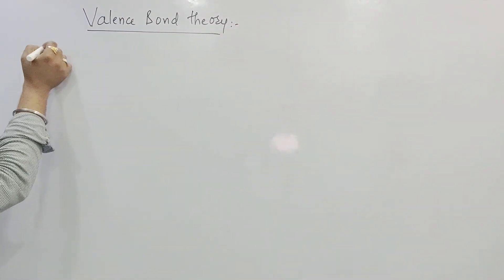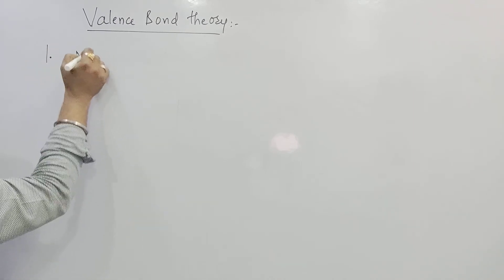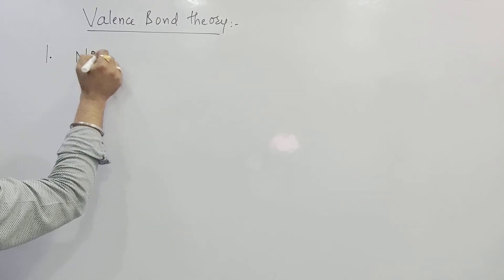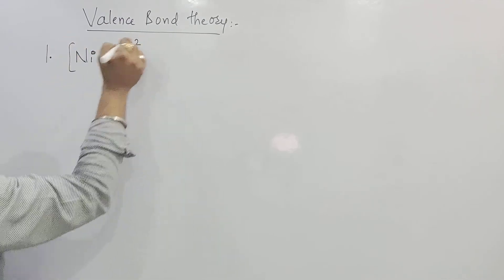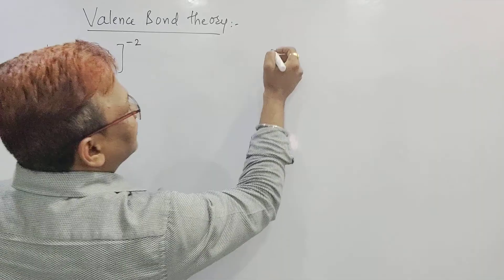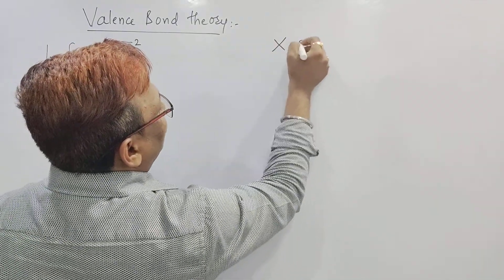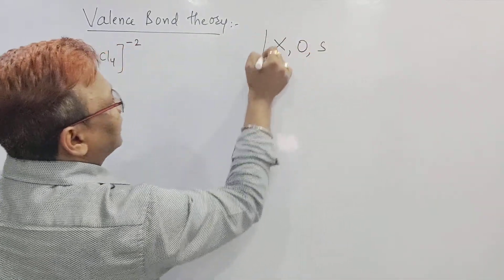Here's a very good example: NiCl4 with a minus 2 charge. Just now I told you, X is the Halogen, O is the Oxygen, S is the Sulphur.